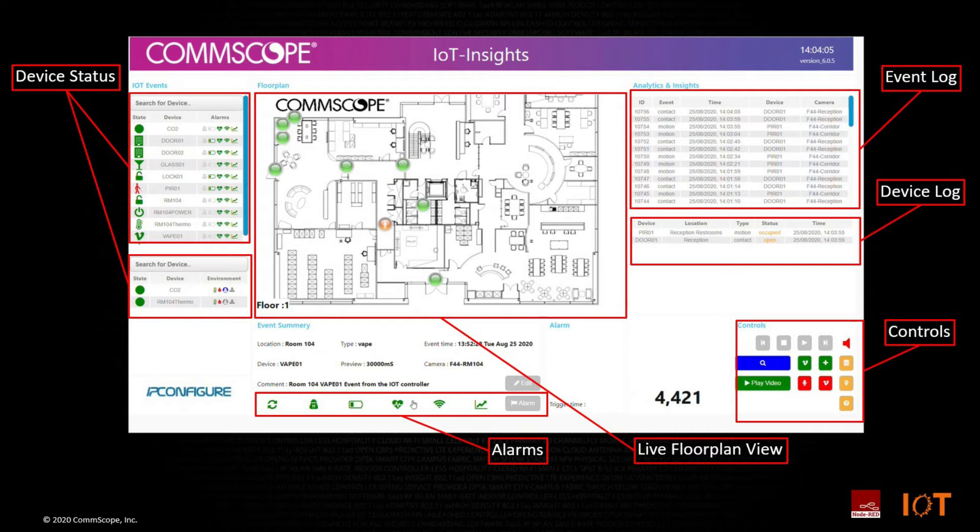In the bottom right-hand corner we have controls that allow us to manage and interface with our database, VMS, and back-end services. We also have a general alarm panel at the bottom giving us an indication of battery level, tamper alarms, loss of signal, RSSI on a ZigBee level, as well as a general overview of the line quality between devices and the IoT controller.